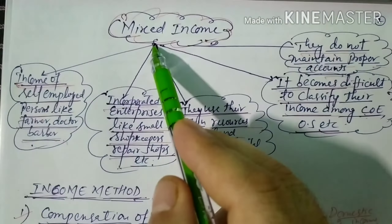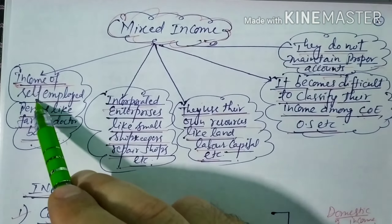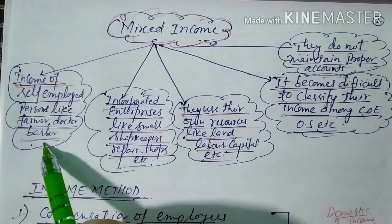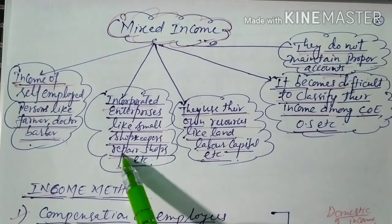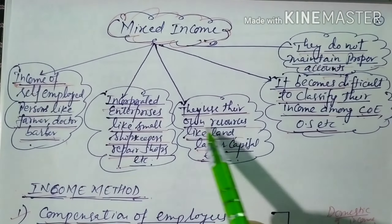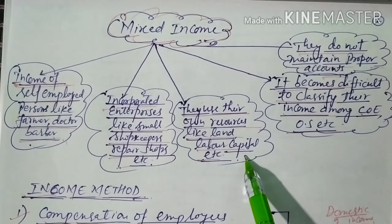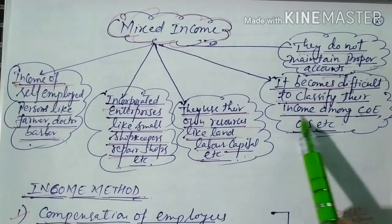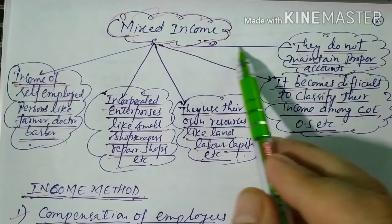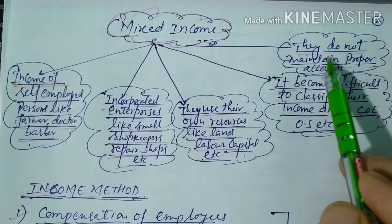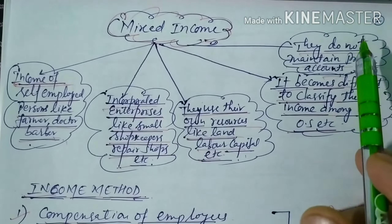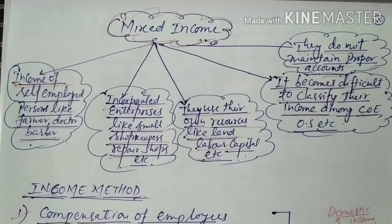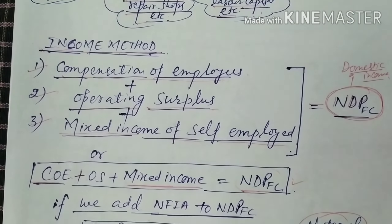Since these self-employed persons and unincorporated enterprises do not maintain proper accounts, it becomes difficult to classify their income into different categories. So that income is placed under mixed income. These are the three main components of the income method.